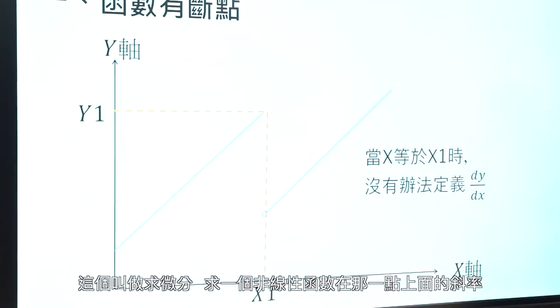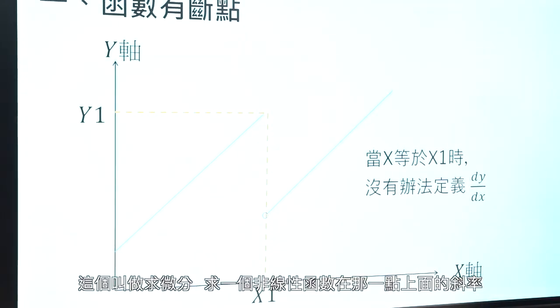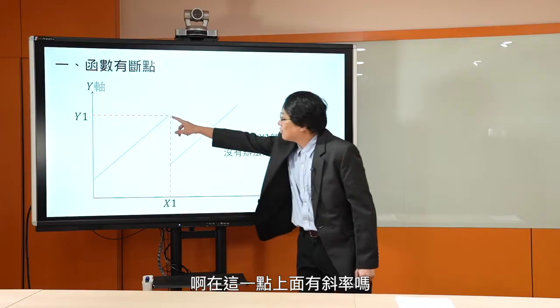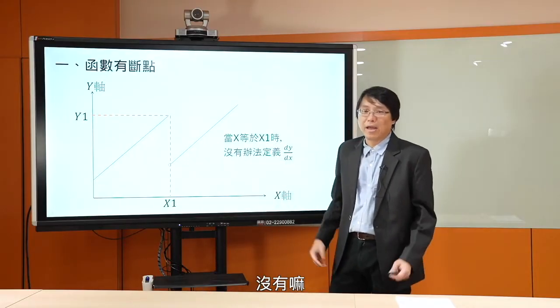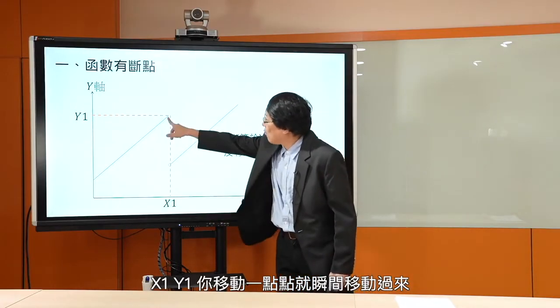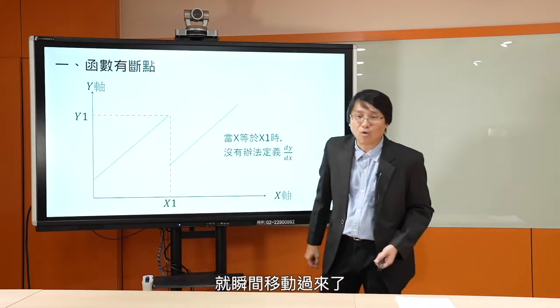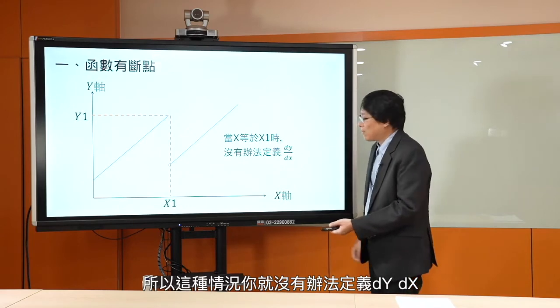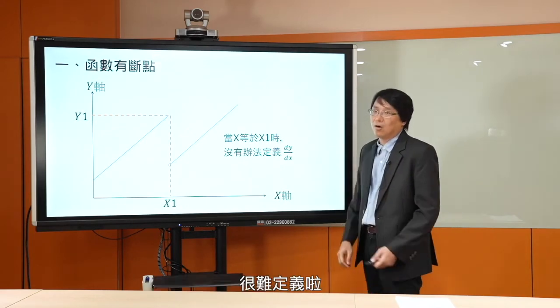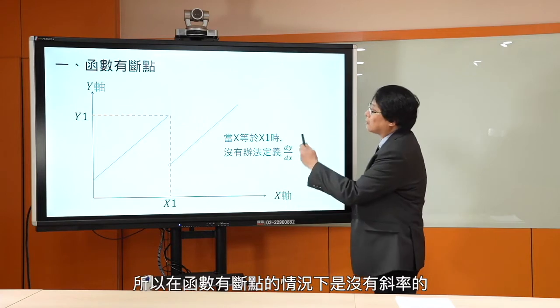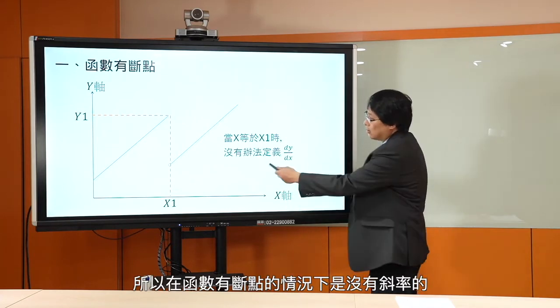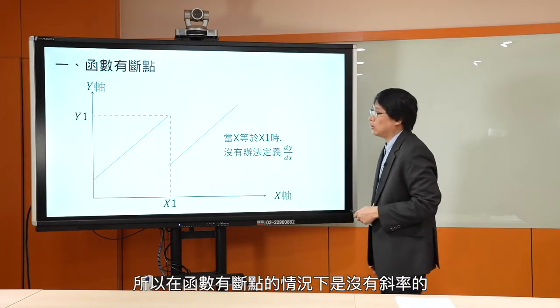这个就是求微分的概念。不过，有些情况是我没有办法求微分的，比如这种函数有断点的情况。我在x1、y1的这一点，没有办法求斜率。为什么？斜率是在x1的点上变动一点点的时候，y的变动率会是多少，这个叫做求微分。在这点上面你变动一点点，他就瞬间移动过来了，所以这种情况下你没有办法定义什么叫dy/dx。在函数有断点的情况下，是没有斜率的定义的。